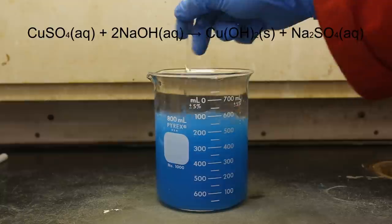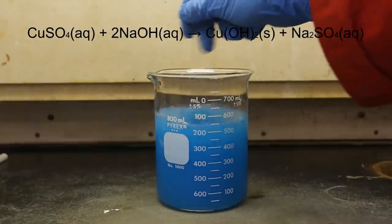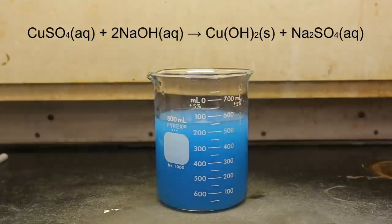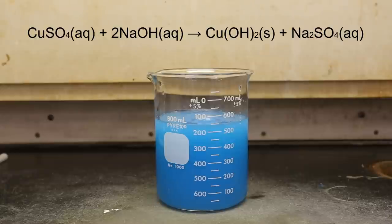This reaction is a double displacement reaction and the overall reaction can be seen above. In the solution, the copper sulfate and the sodium hydroxide are split up into their respective ions. All the ions are floating around in solution and this allows for the copper ions to recombine with the hydroxide ions. This forms the insoluble copper hydroxide solid which precipitates out of solution.